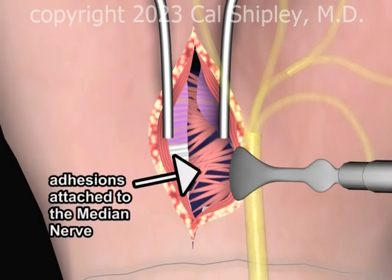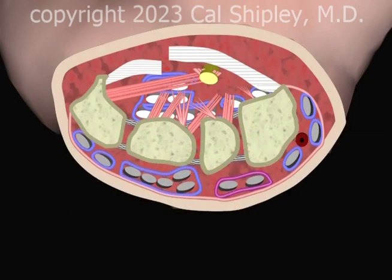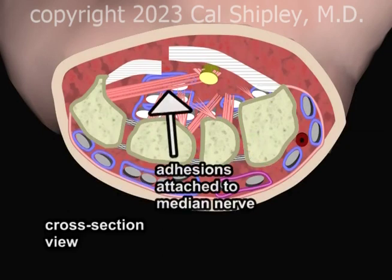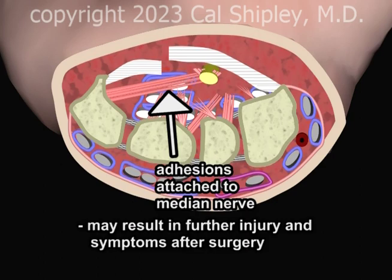Depending on the case, as a result of inflammatory processes within the carpal tunnel, there may be extensive scar tissue adhesions attached to the median nerve. If these adhesions are not excised from the nerve during surgery, traction on the nerve with normal day-to-day use of the hand and wrist may cause further injury and symptoms.